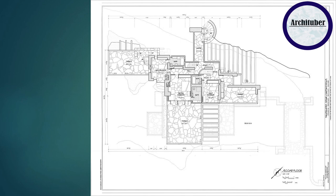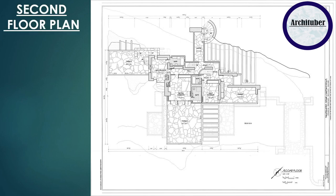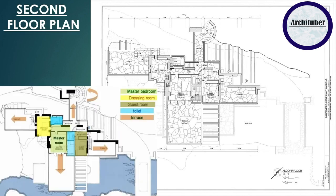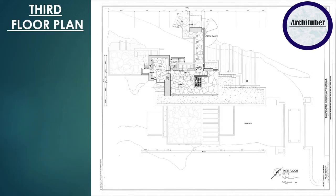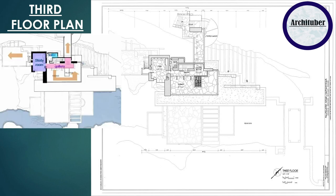Coming to the second floor plan, Wright has planned a master bedroom and guest rooms — basically the sleeping rooms are on the second floor with views of the Bear Run River. There are three terraces on the second floor which give the view of the river.